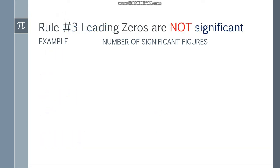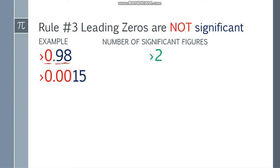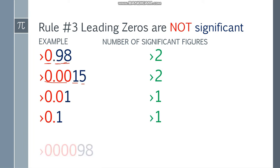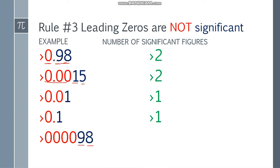Rule number three: leading zeros are not significant. Leading zeros are yung nasa kaliwa. So ganoon tayo dito — 0.98: hindi mo kaka-count itong zero na ito. Ang significant figure mo lang ay 9 at 8 — 1, 2. Next one, 0.0015 — hindi mo kaka-count itong tatlong zero na ito. 1 and 5 — dalawa lang. So 0.01 — we have 1 significant figure. And 0.1 — also 1 din. And lastly, 00098 — walang decimal point, so 9 and 8 lang yung ika-count mo as significant figure. Hindi naman napagitnaan yung zero. So 2 significant figures.